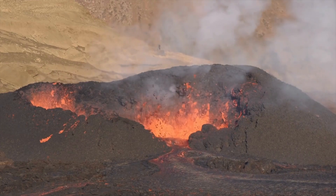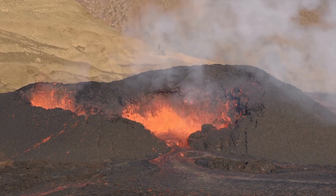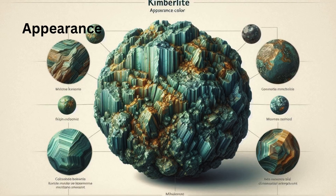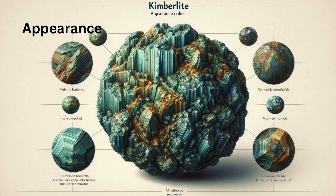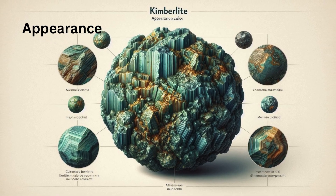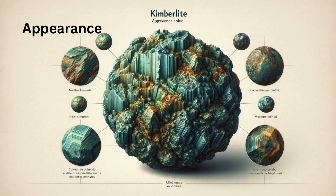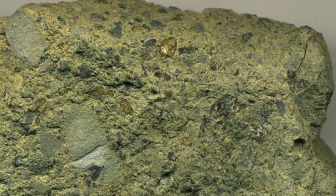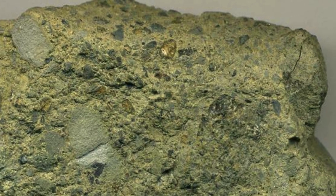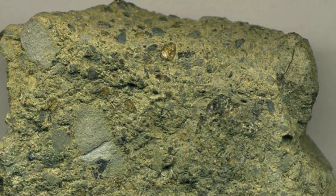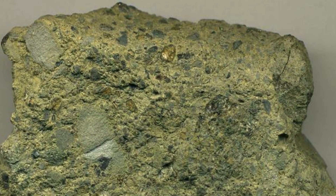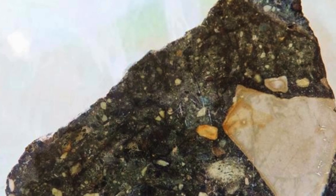Here are key characteristics of kimberlite. Appearance — color: kimberlite typically appears in various shades of green or blue-green, but it can also have brown, yellow, or black hues depending on its mineral content.